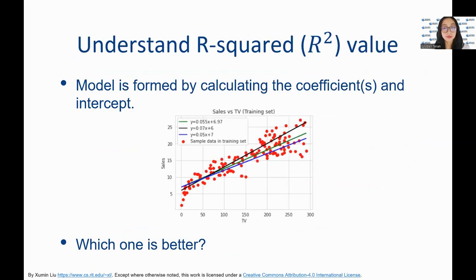Now we will review methods in determining the quality of our model. Given a set of nodes, we can plot several lines to fit the data corresponding to several models, which is formed by calculating the coefficients and intercept. We need a measurement to decide which one is better than others, and thus we use R squared, which we'll discuss soon.